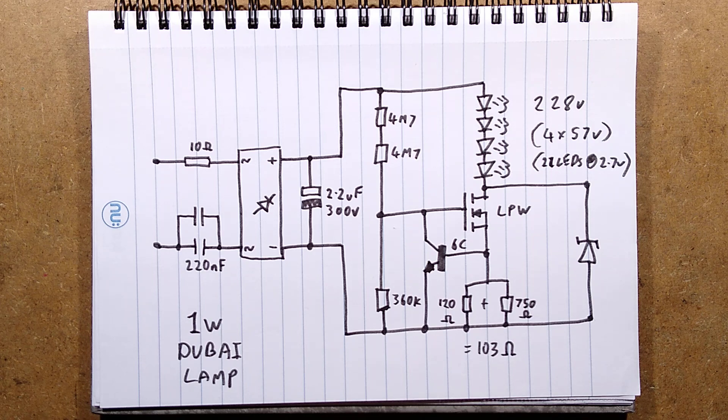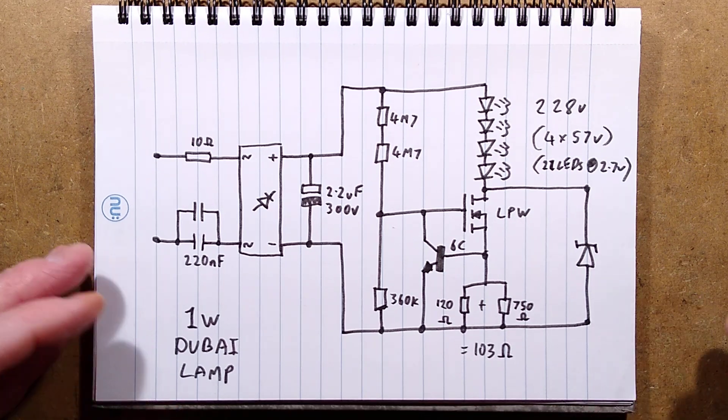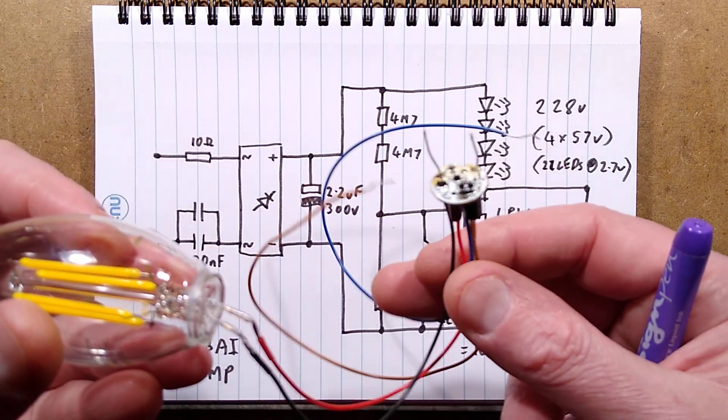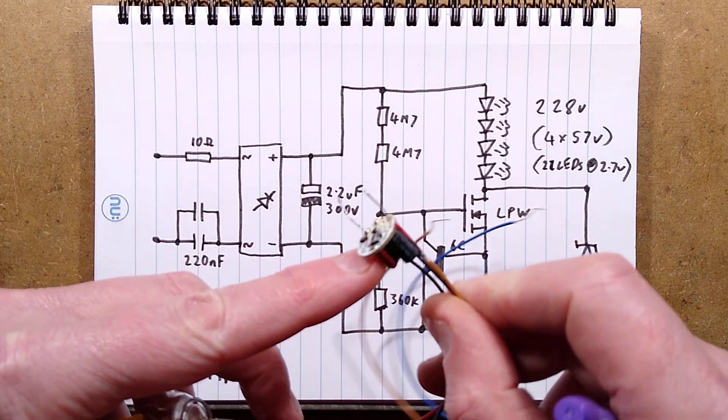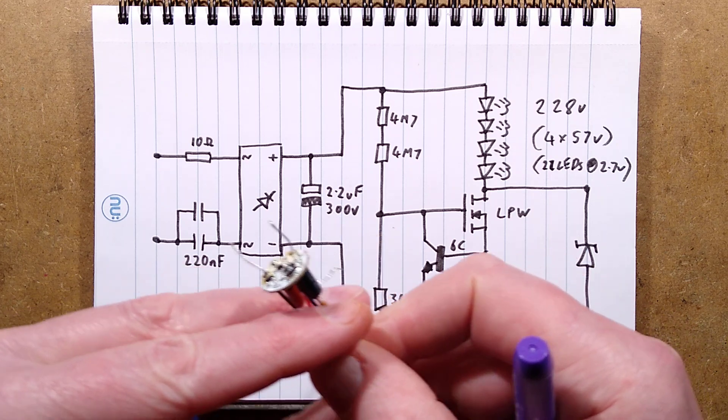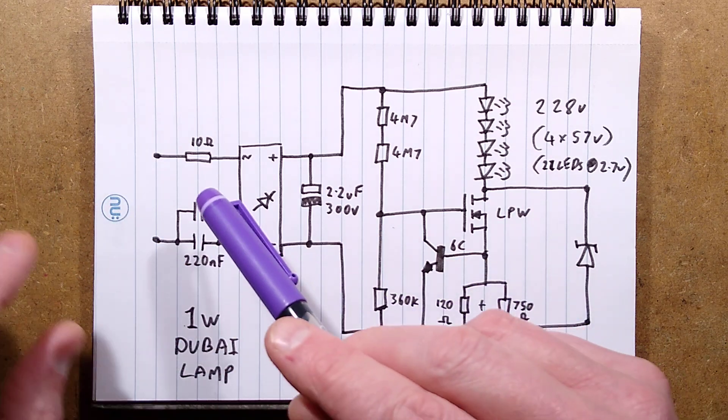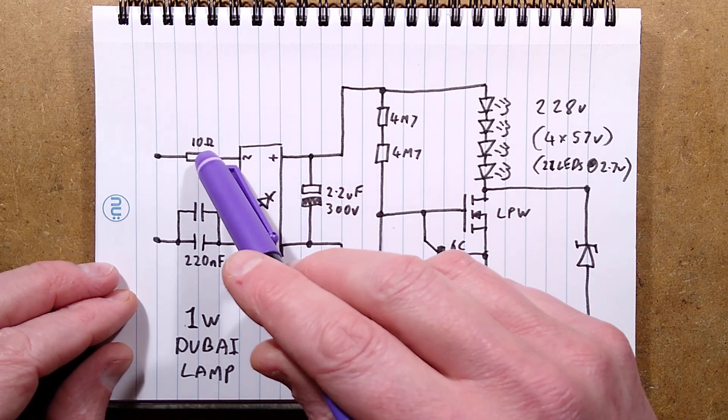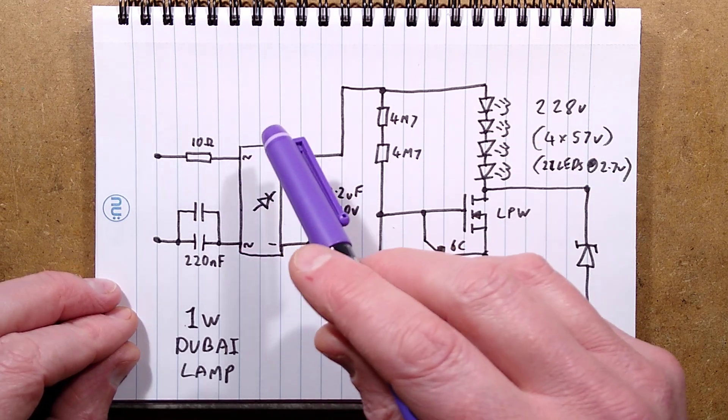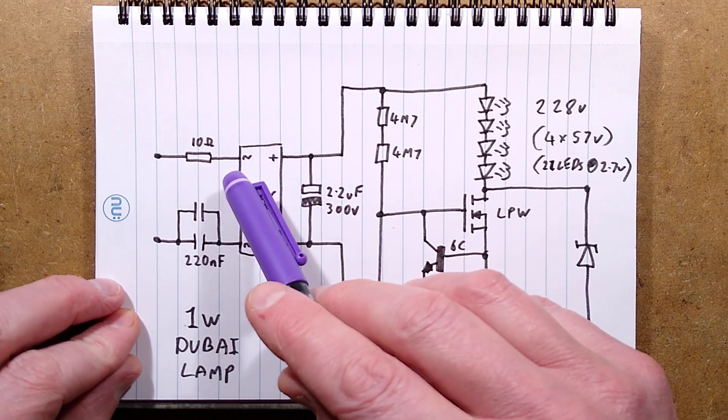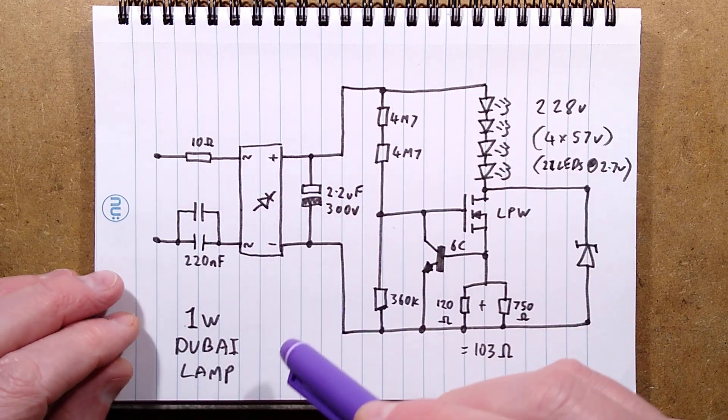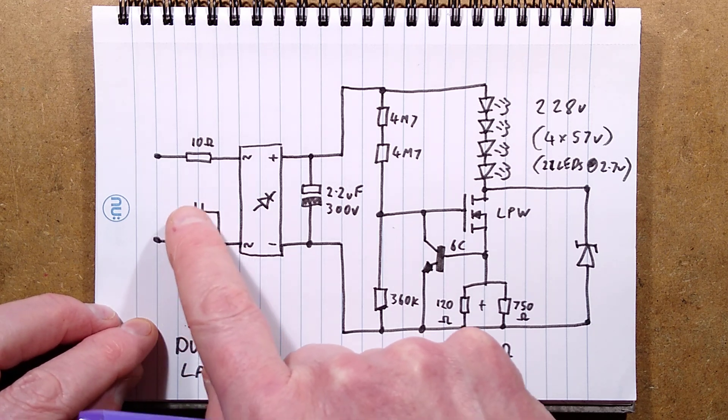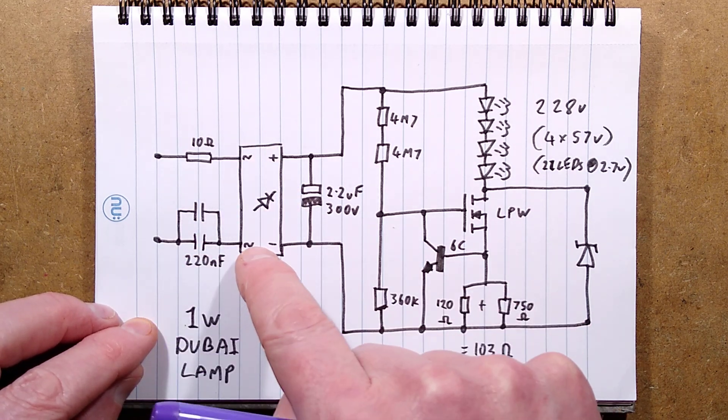The circuitry looks very similar but they've not doubled this stuff up because ultimately they don't need to—it's very low power and there's very little space. They've done an amazing job getting that into that base. We have a 10-ohm resistor to limit inrush current that also acts as a fusible resistor.